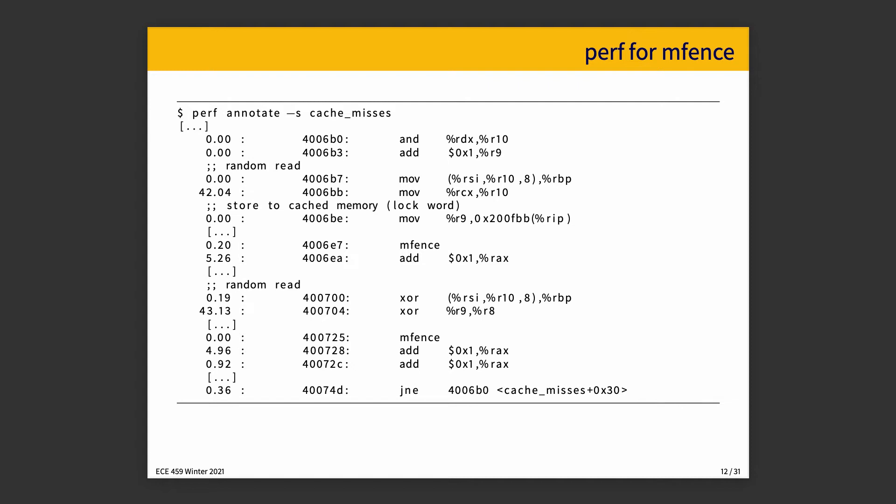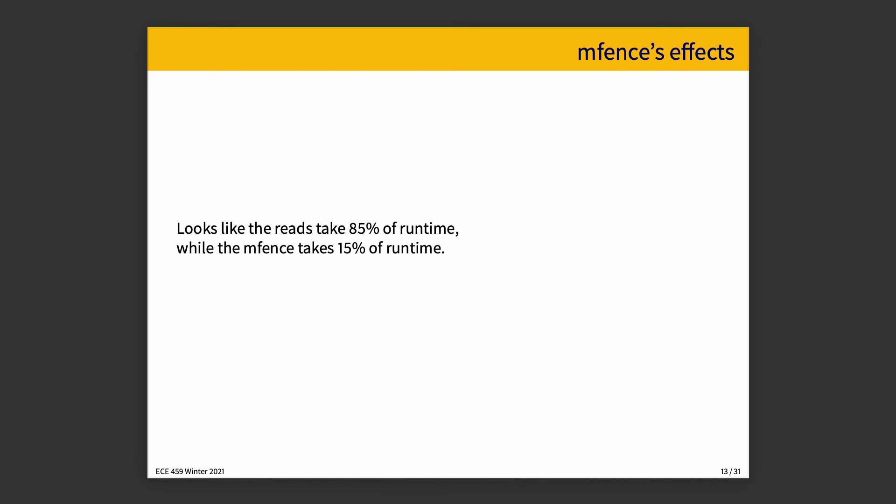Let's look at MFence. In the MFence approach, we can see that 42% here is charged to the move, and then MFence is 0.20, and then 5.26% here for this add, and then 43.13 here for this XOR, and then the MFence here is 0. In this case, it looks like our reads take 85% of the runtime, and MFence only 15.